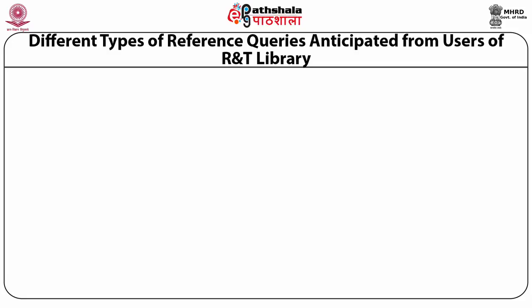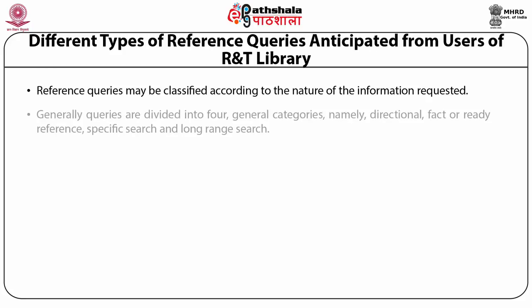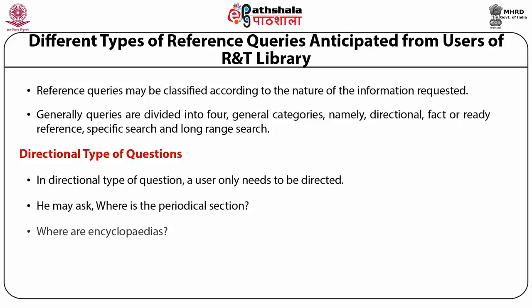Different types of reference queries anticipated from users of special and research libraries: reference queries may be classified according to the nature of the information requested. Generally, queries are divided into four types — directional, fact or ready reference, specific search, and long range reference. Number one, directional type of questions: a user only needs to be directed. He may ask where is the periodical section, where are encyclopedias, where is the catalog, and so on.